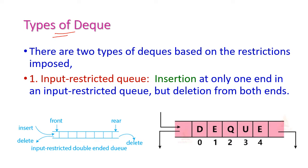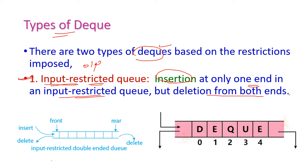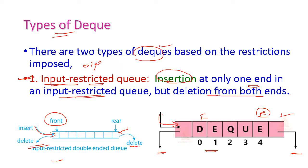There are two types of DEQ based on restrictions. The first one is input restricted DEQ. In input restricted DEQ, insertion can take place at only one end — the other end is restricted for input — but deletion can be performed at both ends. So either from the front side or the rear side, we can insert the data item at only one end, but deletion can be performed at both ends.